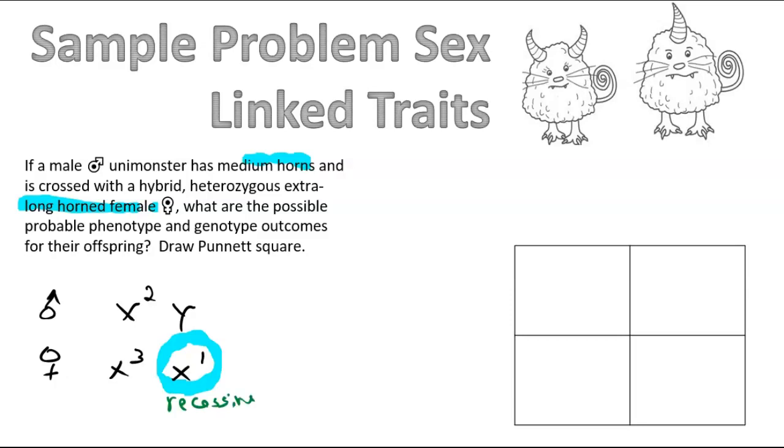So she's only going to show the phenotype for that one. So write the phenotypes down. The female is extra long and the male is medium. Alright, so let's put that into our Punnett square. So put the male here, female.